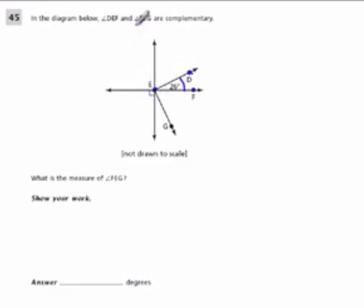26 degrees. And F, E, G. So let's follow those points. Here's F, E, and G. So that's this angle right here. We don't know what it is. But we know that this blue angle and red angle are complementary.